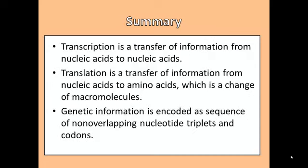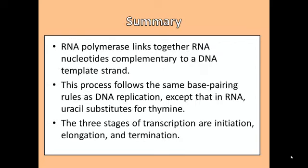Transcription is a transfer of information from nucleic acids to nucleic acids. Translation is a transfer of information from nucleic acids to amino acids, which is a change of macromolecules. Genetic information is encoded as a sequence of non-overlapping nucleotide triplets and codons. RNA polymerase links together RNA nucleotides complementary to a DNA template strand. This process follows the same base pairing rules as DNA replication, except that in RNA, uracil substitutes for thymine.